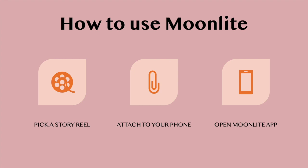How to use the Moonlight is very simple. You will pick a story reel, attach it to your phone — the projector piece will go over your flashlight on your phone — and then you will open the Moonlight app and enjoy your story.